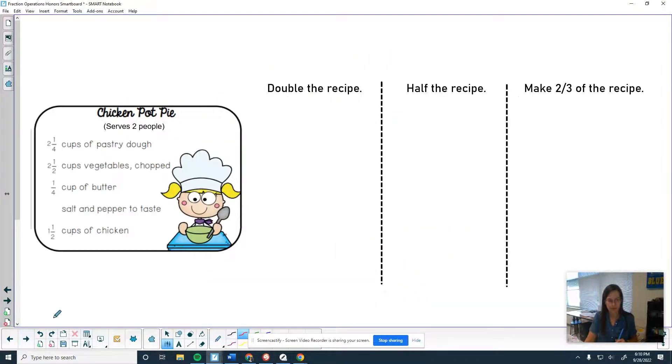Alright, so next thing we're going to look at is a recipe because a lot of recipes have fractions in them. So this is an example of a chicken pot pie recipe. We got pastry dough, vegetables, butter, salt and pepper, and chicken. I feel like this is pretty basic. I don't know if it would actually come out good. But it says it serves two people. So in real life, like if people are making recipes, a lot of times they mess with the recipes a little bit to serve however many people they need. So a common thing would be to double the recipe. So you could serve four people or half the recipe if you're serving one person. Then I just made up a random one, make 2/3 of the recipe just to practice.